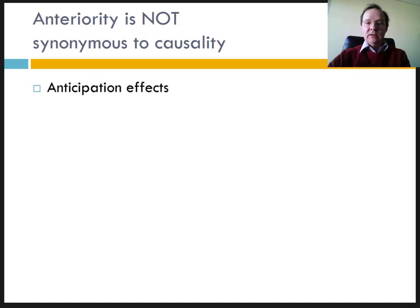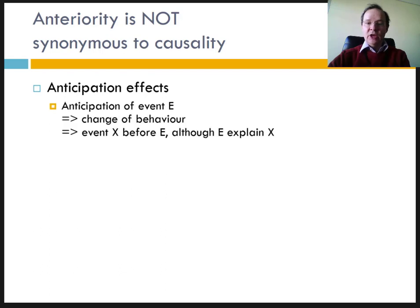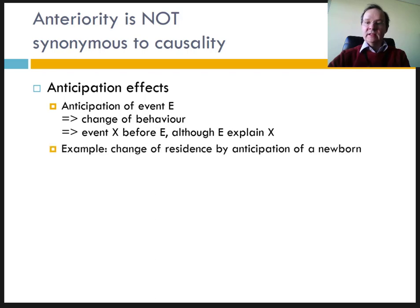Indeed, human beings are capable of anticipation. This means that when you believe that an event is going to take place, you change your behavior accordingly. You can change your status because you believe the event is going to take place. For example, you can change your residence and take a bigger apartment because you are expecting a baby. This is called the problem of fuzzy time.